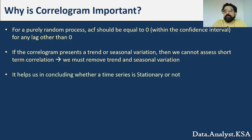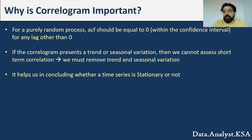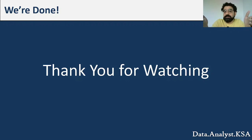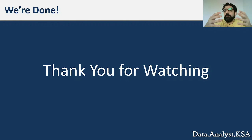The correlogram helps us conclude whether a time series is stationary or not, which we will discuss in the next video. Stationarity is critical for further analysis, specifically for autoregressive (AR) and moving average (MA) modeling. In this video you learned how to develop a correlogram and understand each calculated value; in the next video we will use it to make inferences about the time series.